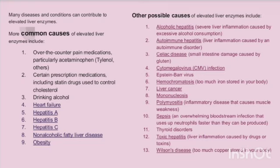Other possible causes include alcoholic hepatitis — severe liver inflammation caused by excessive alcohol consumption; autoimmune hepatitis — liver inflammation caused by an autoimmune disorder; celiac disease — small intestine damage caused by gluten; cytomegalovirus infection; Epstein-Barr virus; hemochromatosis — too much iron stored in the body; liver cancer; mononucleosis; and polymyositis — an inflammatory disease that causes muscle weakness.